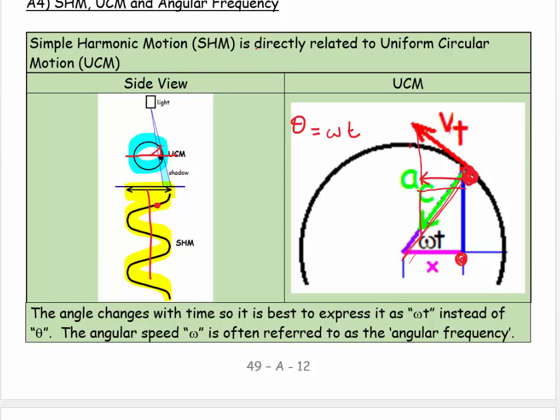Simple harmonic motion is directly related to uniform circular motion. You take the X component of the uniform circular motion, and it gives you the parameters for the simple harmonic motion. The angle changes with time, so it is best to express it as omega t instead of theta.